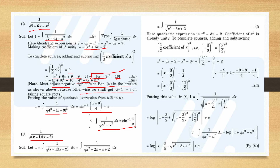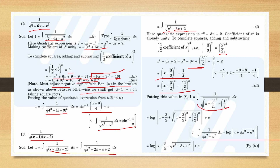Question 13: factorize the product first to get a quadratic, then proceed with 1/√(quadratic). With coefficient of x² as 1, half of the coefficient of x is −3/2. Add and subtract (3/2)², giving (x − 3/2)² − (1/2)². This is the form x² − a², so the formula log|x + √(x² − a²)| + C applies. You can also substitute x − 3/2 = t since its derivative is 1.